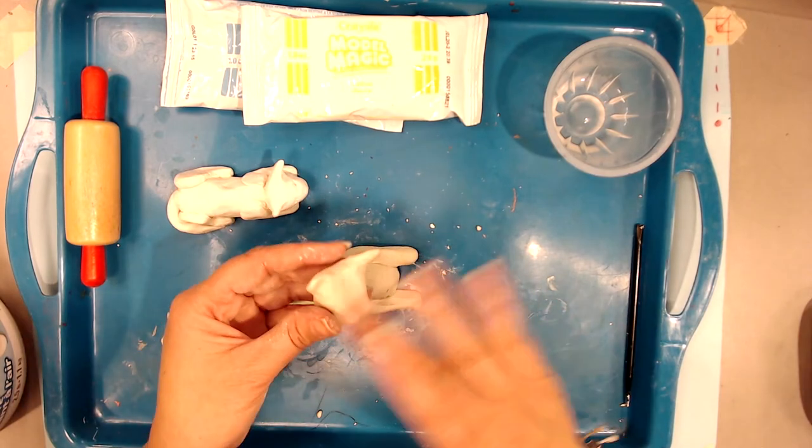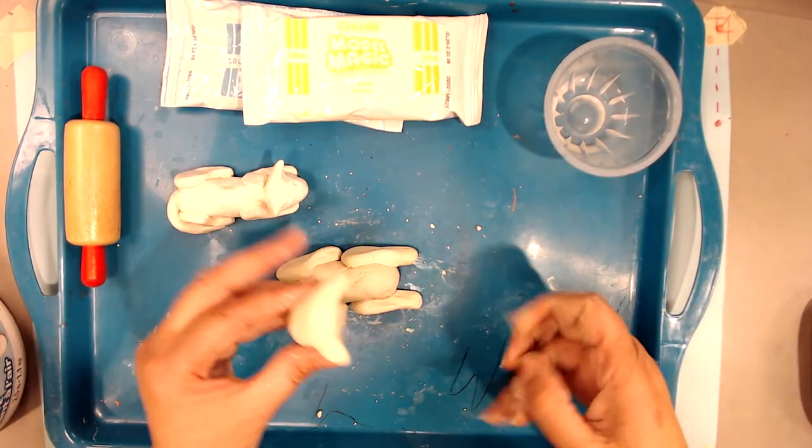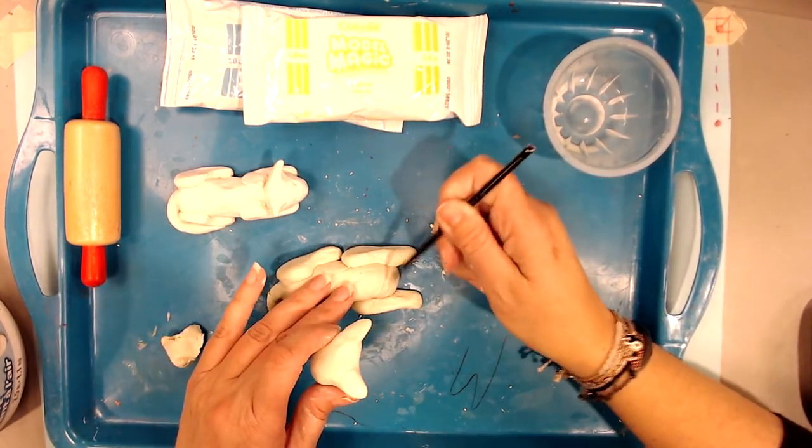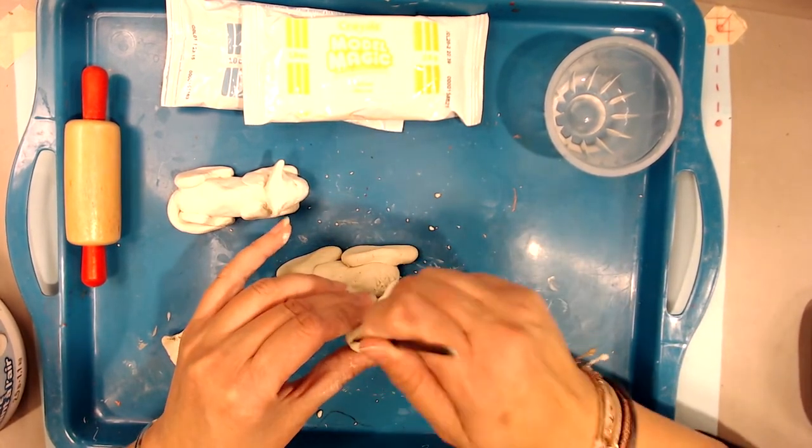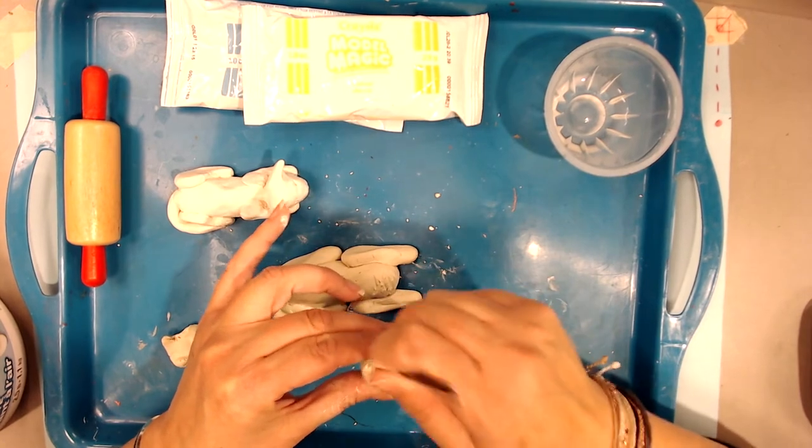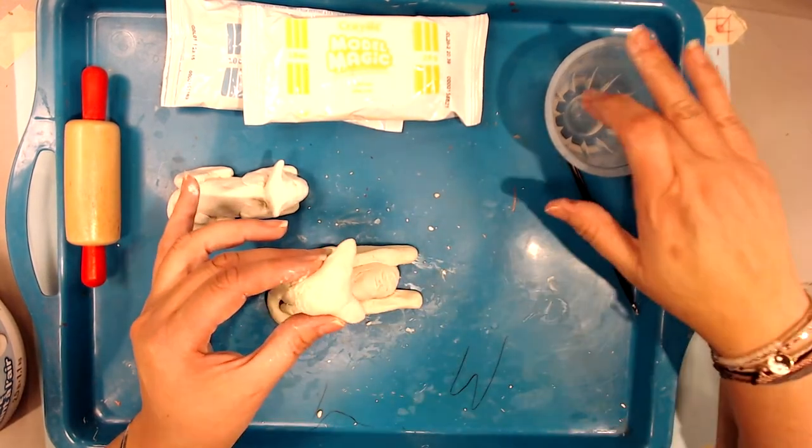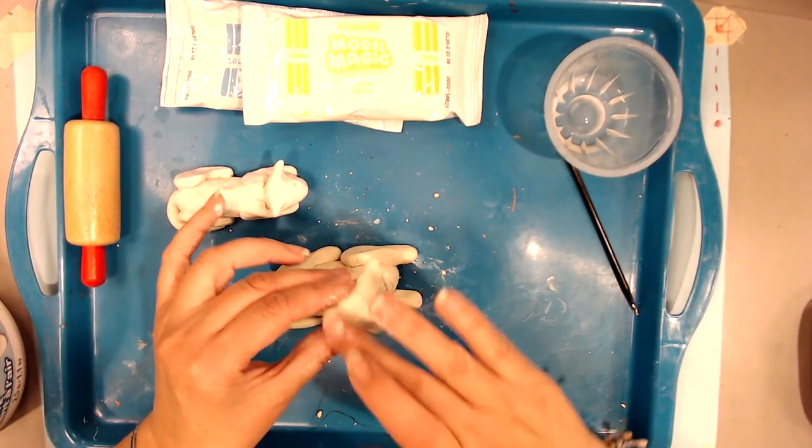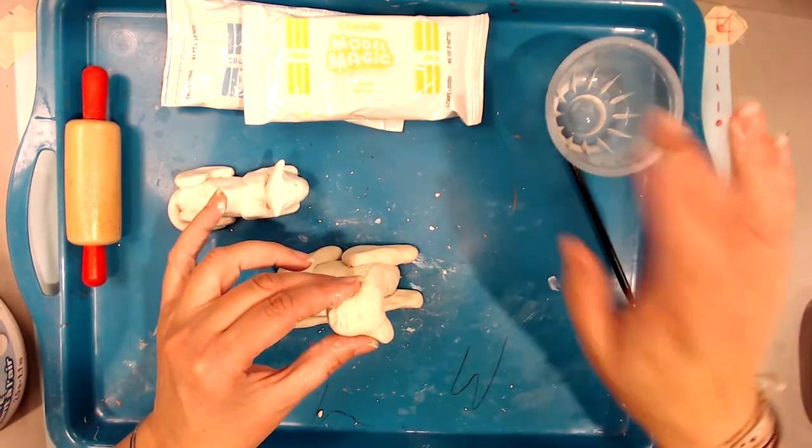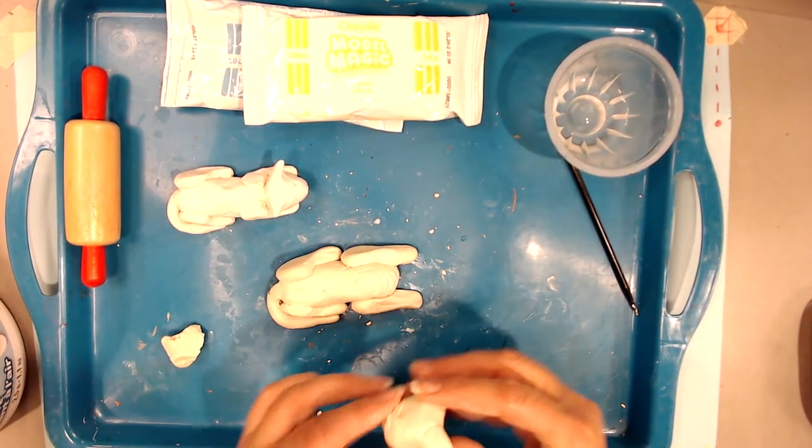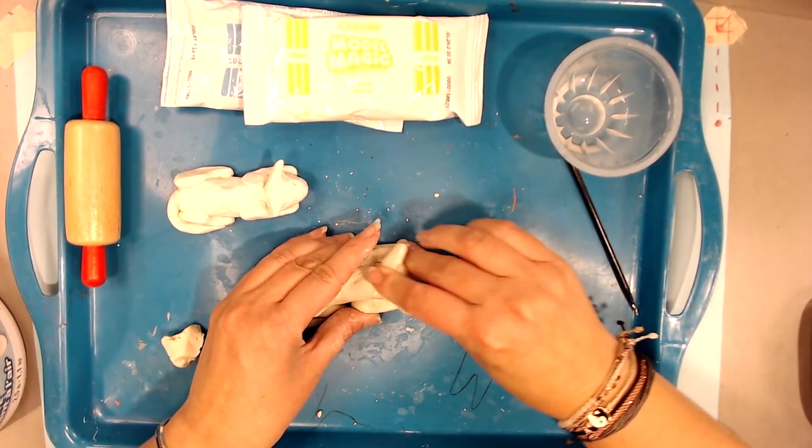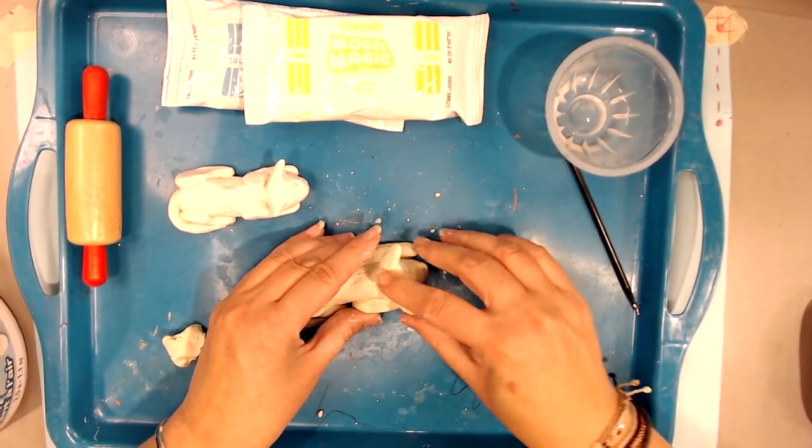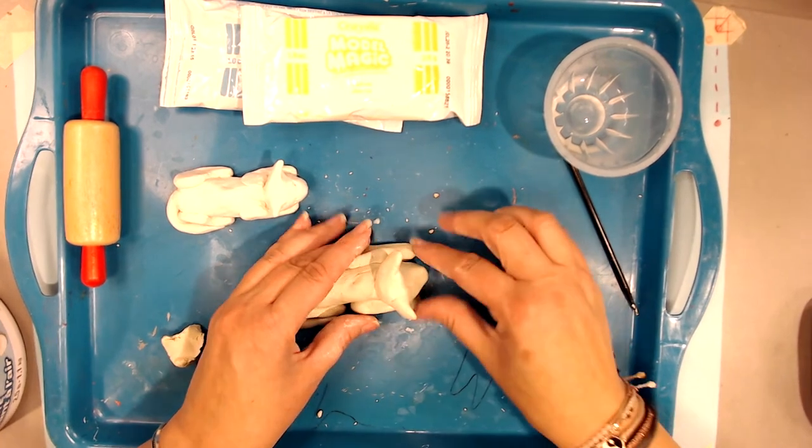Now eventually I'll add some eyes but I want to go ahead and attach this head first. I'm going to scratch up the body and the head so I get a good bond and put a dab or two of water. Then smush the head gently onto the body.